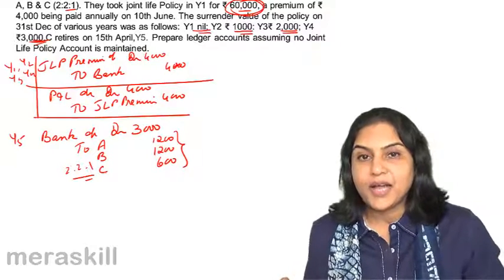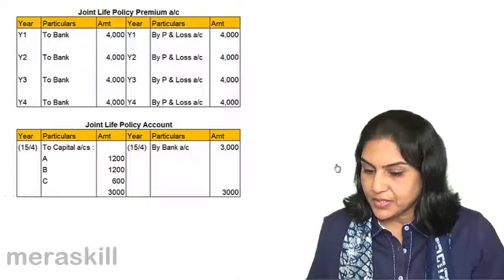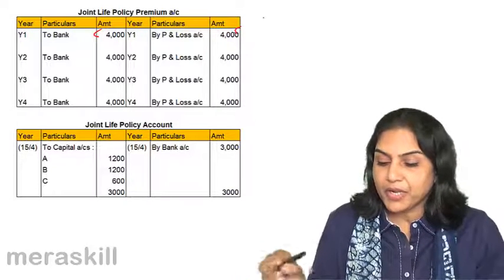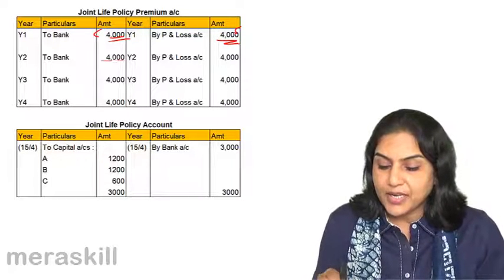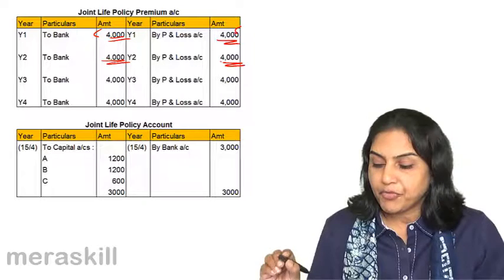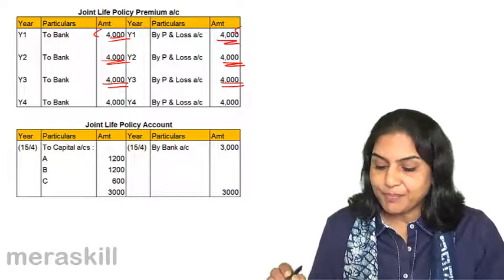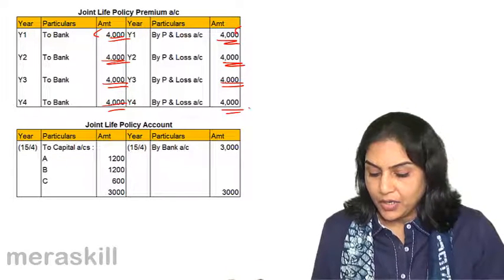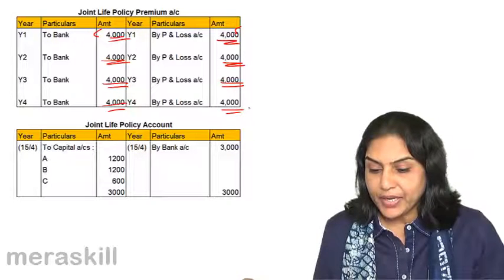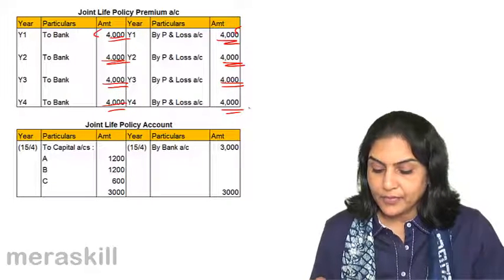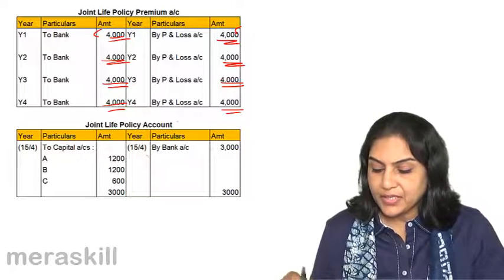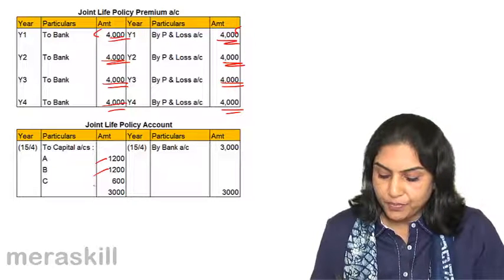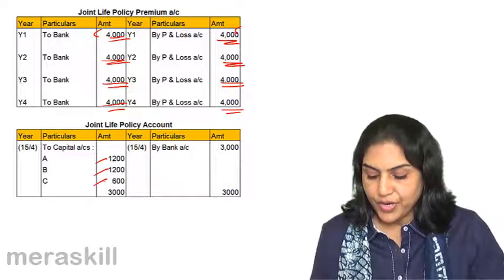Let us look at a neater presentation. Joint life policy premium account debit in year 1 to bank; then closed by profit and loss. Similarly, second year — to bank, profit and loss, and close. It's treated as an expense of the firm and closed; we don't have any asset account. On receipt of the surrender value, bank account debit to joint life policy account; and then joint life policy account debit to A, B, and C — 1,200, 1,200, and 600.